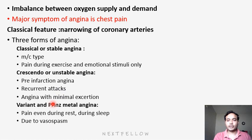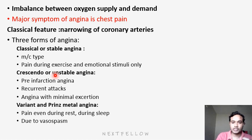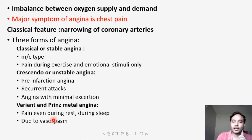Variant or Prinzmetal angina is due to vasospasm. Stable and unstable angina are both due to occlusion of arteries — atheromatous occlusion in arteries leads to stable and unstable angina. But variant angina is due to coronary vascular spasm. Spasm of the coronaries leads to variant angina. The classical feature is that pain occurs during rest — and even during sleep the patient is feeling pain, which indicates variant or Prinzmetal angina, mainly due to vasospasm.